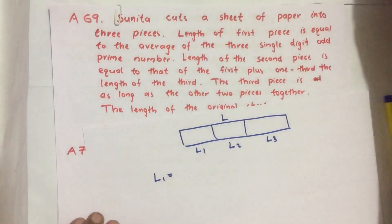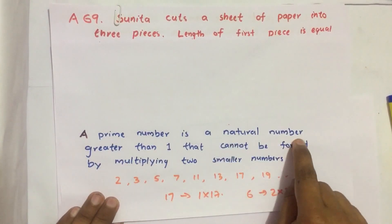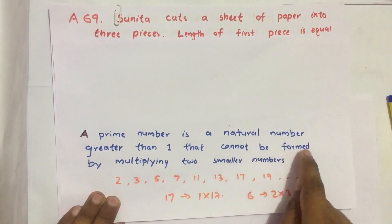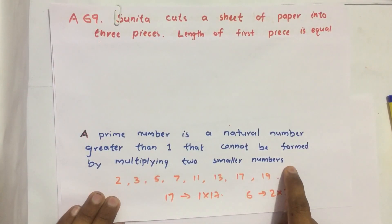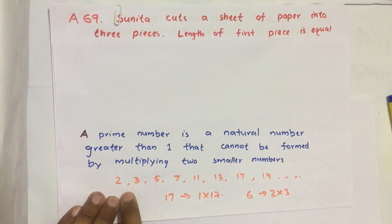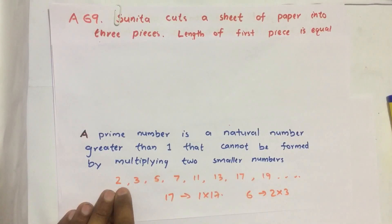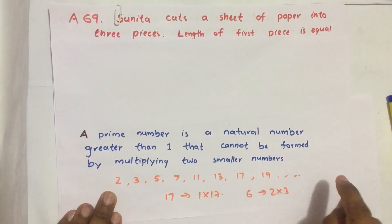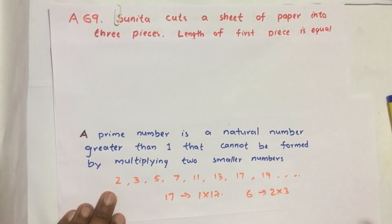So what is a prime number? A prime number is a natural number greater than one that cannot be formed by multiplying two smaller numbers. Prime numbers starting from 2 are: 2, 3, 5, 7, 11, 13, 17, 19, 23, and so on.